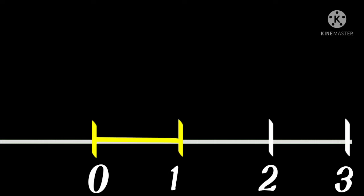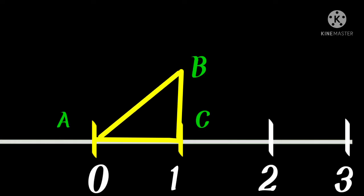We take one unit from C to B, and we label the points A, B, C, D so it's easier to follow. From A to C it's one unit, and from C to B it's another one unit. If we join A and B, that length AB is √2 — simply because of Pythagoras' theorem. In this right triangle, one side is 1 and the other side is 1, so the hypotenuse is √(1² + 1²) = √2.